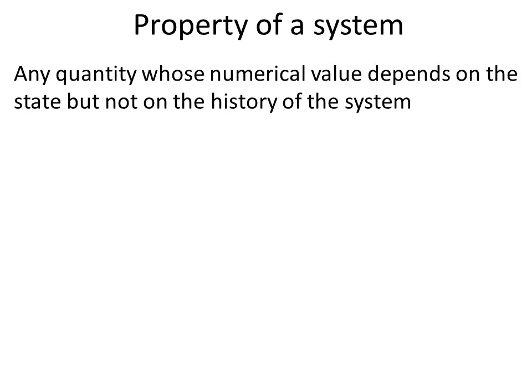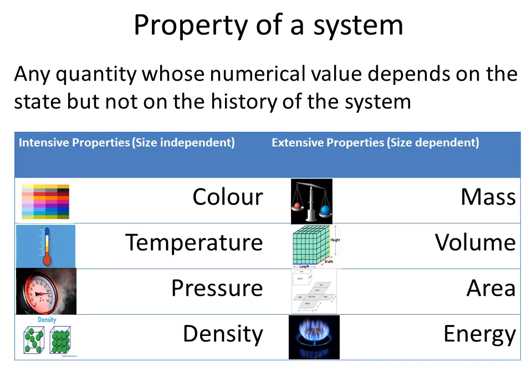Based on dependency on mass, a property of a system is classified into two: intensive properties and extensive properties. Intensive properties are those which are independent of the size or mass of a system — examples include pressure, temperature, and density. Extensive properties are those which are size-dependent or dependent on mass — examples include volume, area, and energy.